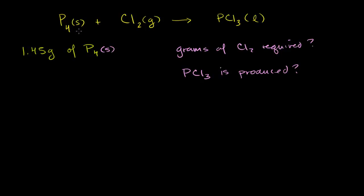We know that solid phosphorus will react with chlorine gas to spontaneously produce phosphorus trichloride, liquid phosphorus trichloride. We're told that we have 1.45 grams of solid molecular phosphorus, and we're asked how many grams of chlorine is required to essentially use up all of the phosphorus that we have, and how many grams of phosphorus trichloride is going to be produced.